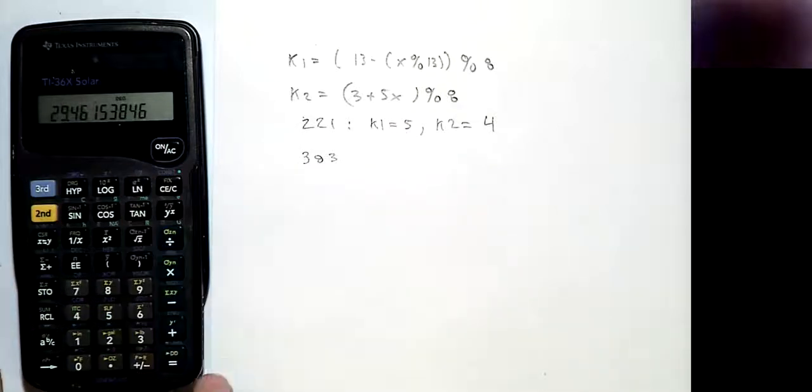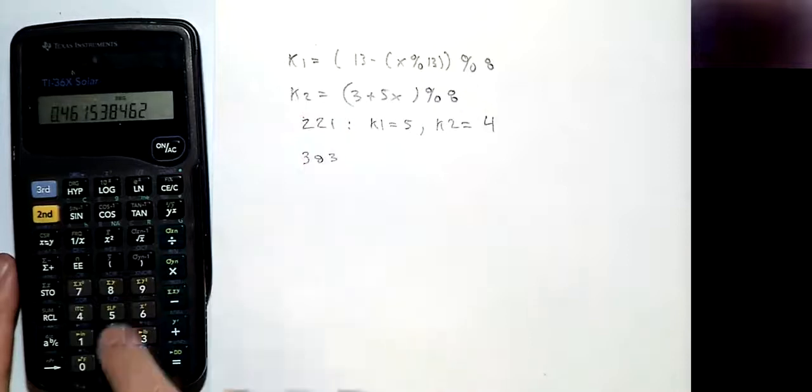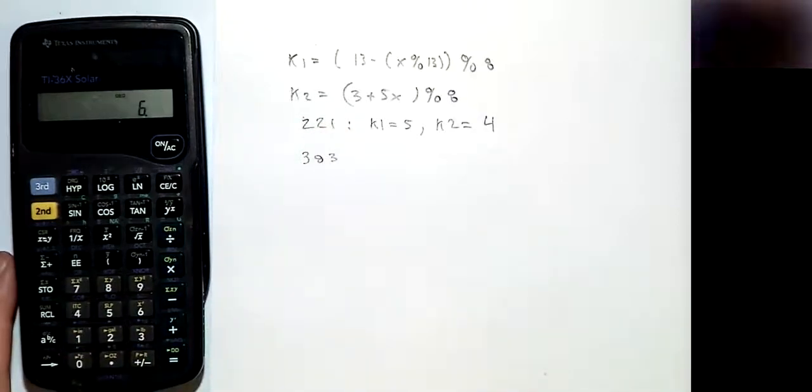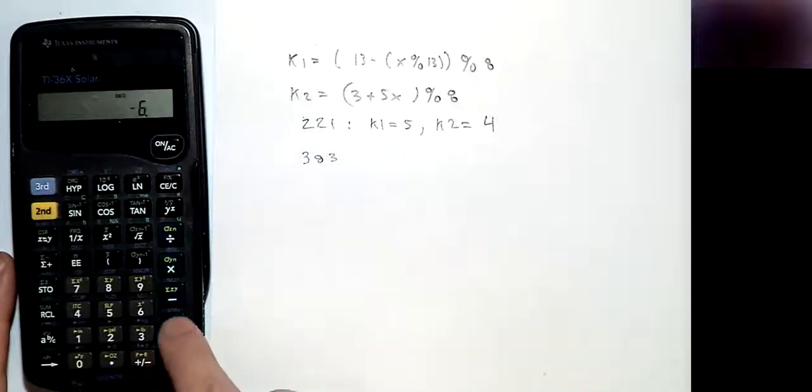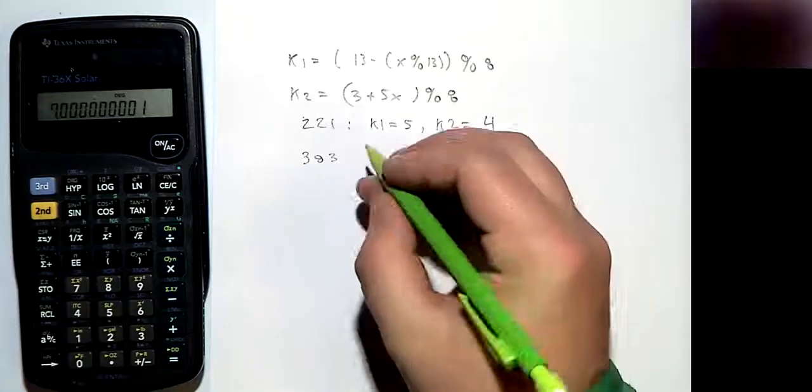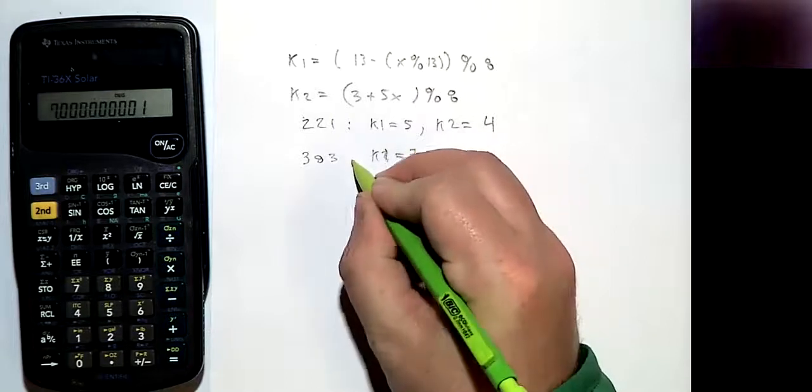So if you want to get mod, if you have one of these calculators, you just do minus 29 times 13, and that gives you the remainder, which is 6. So we have 13 minus 6 is 7. Now we have 7 is k1.